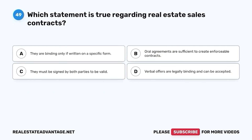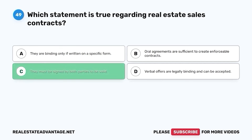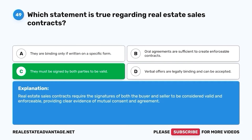Question 49. Which statement is true regarding real estate sales contracts? A. They are binding only if written on a specific form. B. Oral agreements are sufficient to create enforceable contracts. C. They must be signed by both parties to be valid. D. Verbal offers are legally binding and can be accepted. The correct answer is C. They must be signed by both parties to be valid. Real estate sales contracts require the signatures of both the buyer and seller to be considered valid and enforceable, providing clear evidence of mutual consent and agreement.